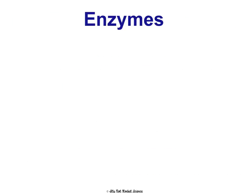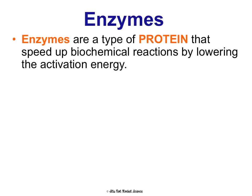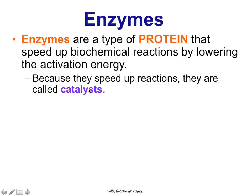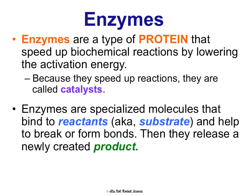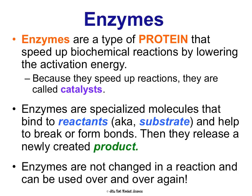Now let's talk about what enzymes have to do with chemical reactions. Enzymes are a type of protein — one of our macromolecules — and they speed up biochemical reactions by lowering the activation energy, making it take less energy to get the reaction started, which is why reactions happen faster. Because they speed up reactions, they're called catalysts. Enzymes are specifically proteins that are catalysts. They're very specialized molecules that bind to very specific reactants or substrates, break or form bonds, and then release a newly created product. The enzyme itself is not changed in the reaction, so it can be used over and over again.